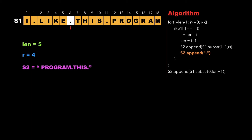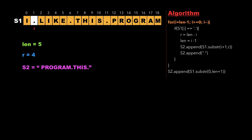We decrement i again and keep decrementing until we find a dot. At index 1 we encounter a dot, so we update r as length minus i, which is 4.